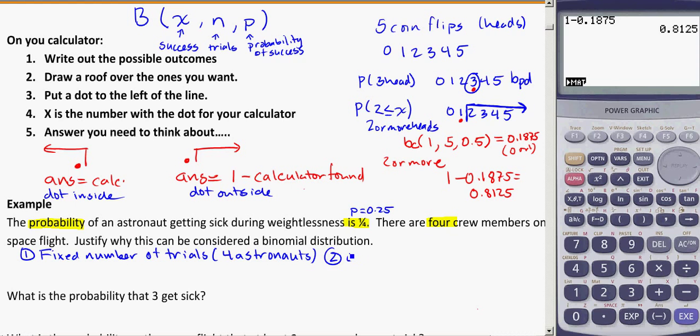Number two. There's only two outcomes, or only success or failure. So either they get sick, or not sick. Right? So they barf or they don't for motion sickness.